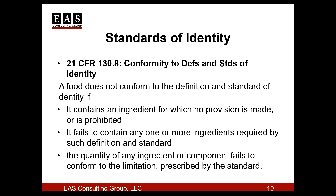Section 21 CFR 130.8 talks about conformity to definitions and standards of identity, but this section is actually about when a food does not conform to the standard. Basically, if you put something directly into a food that is prohibited specifically in the standard, or if you leave something out that is called for in the standard, or if you put in too much or too little of a required ingredient, then the food is no longer considered the standardized product. An ingredient that has no provision for it in the standard of identity may only be added as an incidental additive at a non-functional and insignificant level.